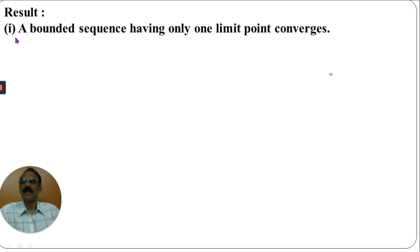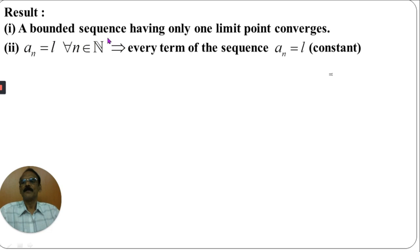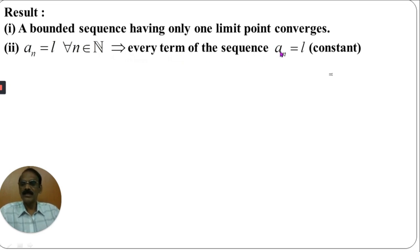We have some results. The first important result: a bounded sequence having only one limit point converges. If AN equals L for all N belonging to N, then every term of the sequence must be L.